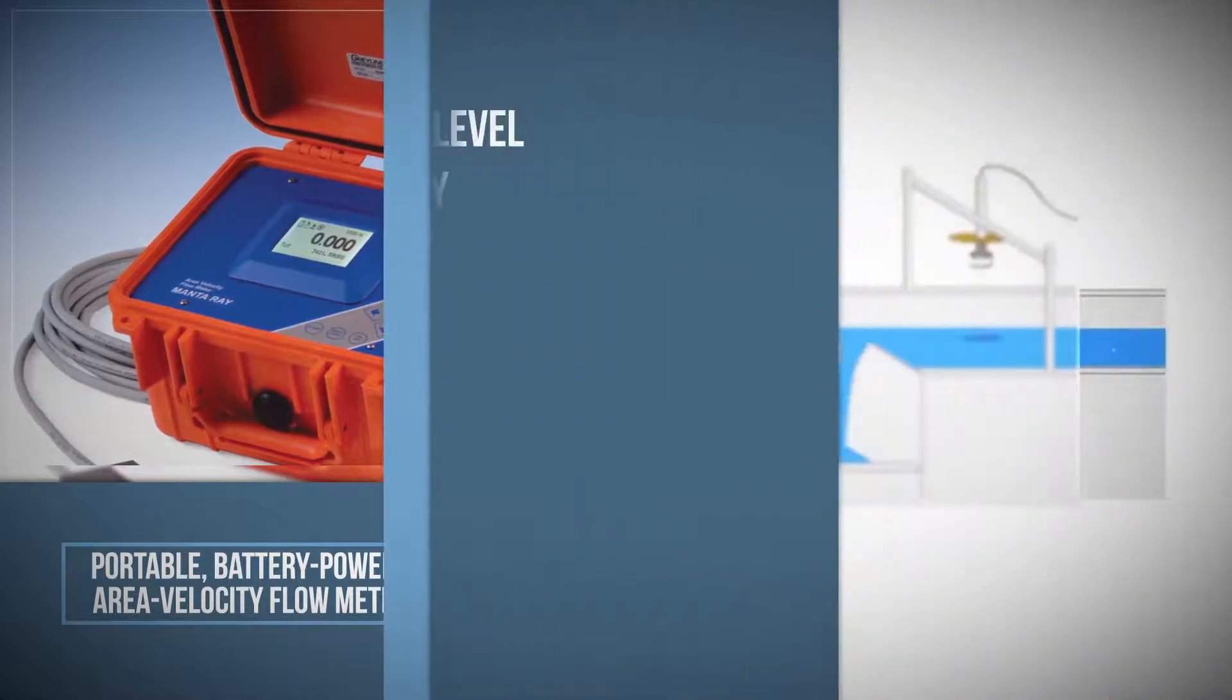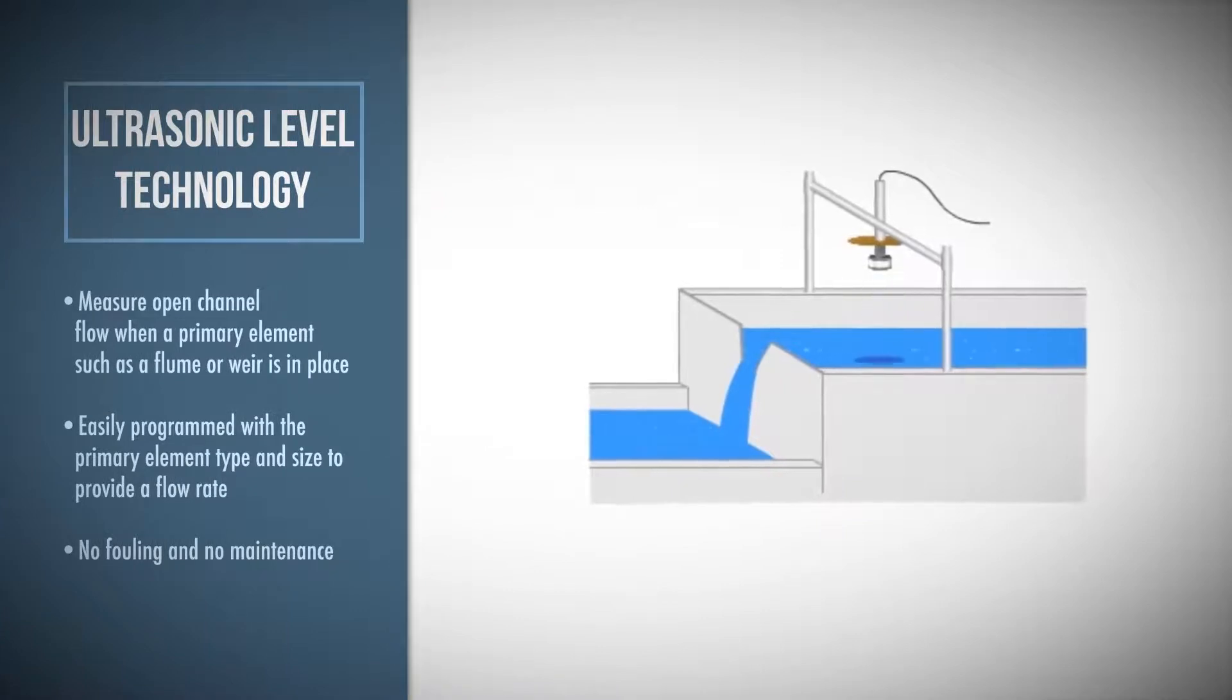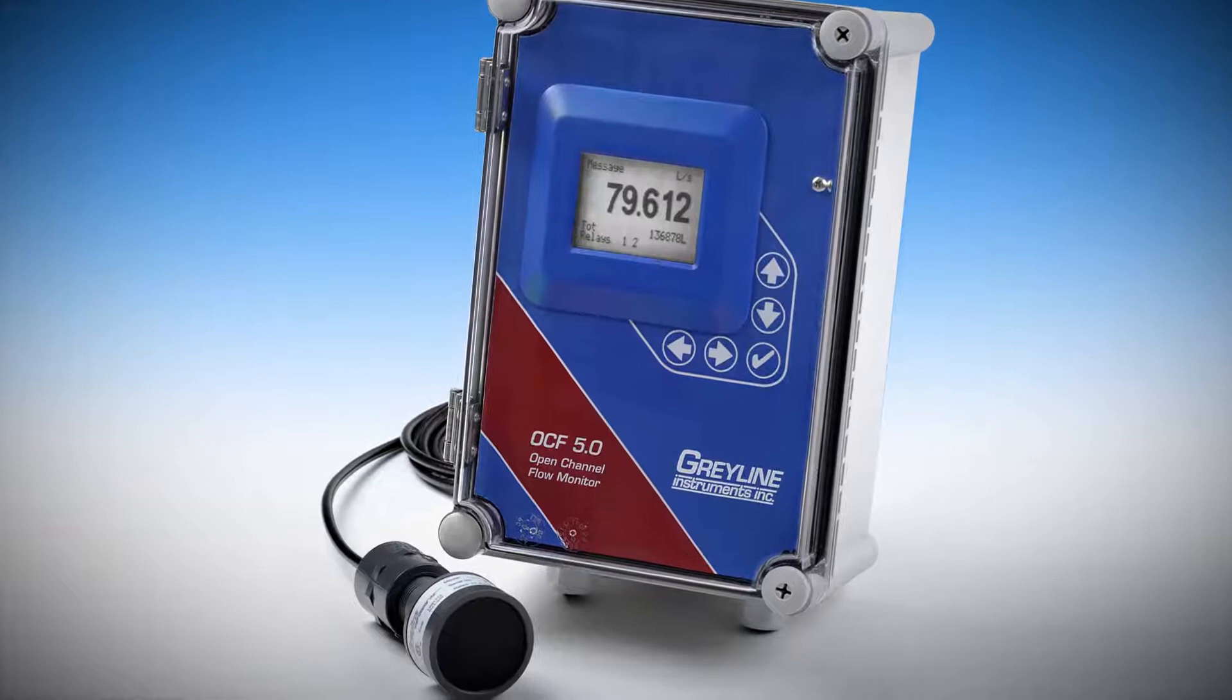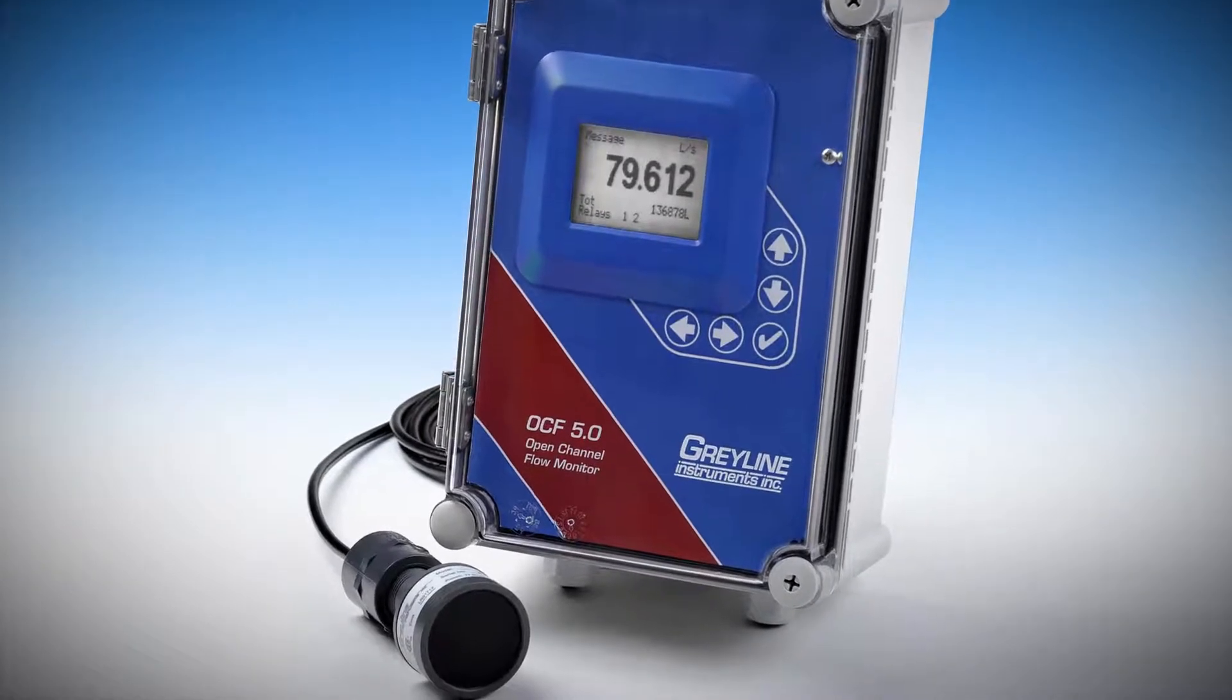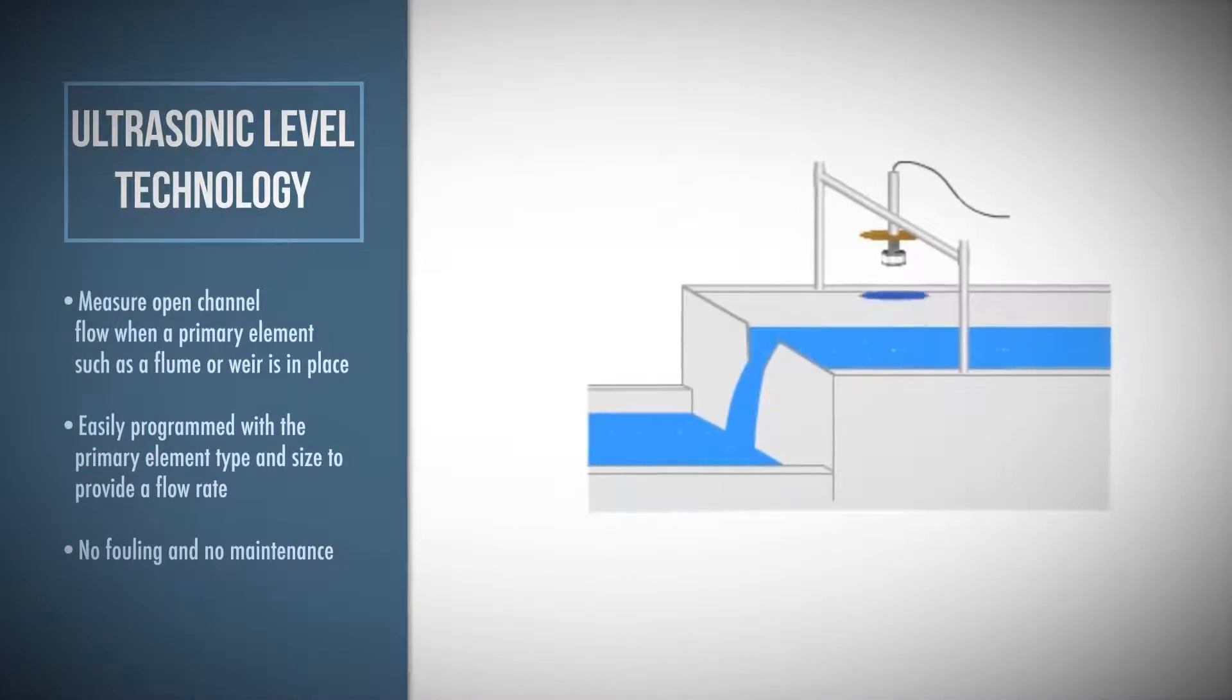Grayline's ultrasonic level technology can be used to measure open channel flow when a primary element such as a flume or weir is in place. The level sensing open channel flow meter is easily programmed with the primary element type and size to provide a flow rate. Non-contacting level measurement means no fouling and no maintenance.